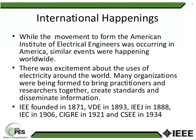The first electrical organization founded was the IEE, the Institute of Electrical Engineers, a London, England-based institute founded in 1871 — a full 13 years before the AIEE. VDE, the German Electrical Engineering Society, was founded in 1893. The Japanese Electrical Engineering Organization was founded in 1888. IEC, the International Electrotechnical Commission, in 1903. CIGRE in 1921, and the Chinese Society of Electrical Engineers in 1934.